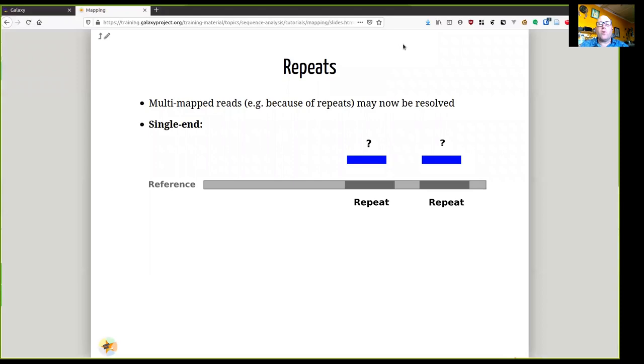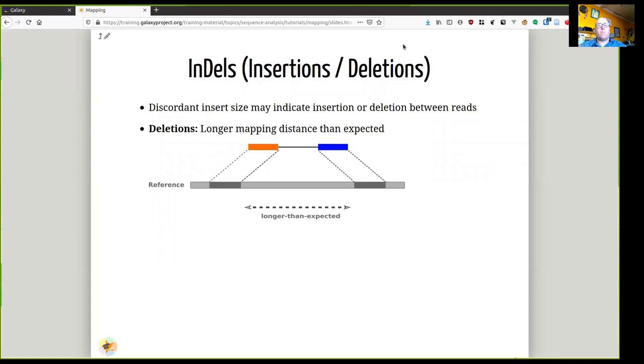So let's take this example of some repeats. If we had two copies of the same DNA in the reference genome and we got a match to one of them, we wouldn't know which copy to map to. But with paired-end information, we can use the fact that the other pair of the read is some distance away to sometimes resolve a repetitive region.